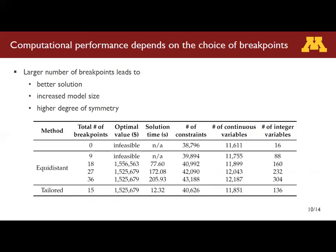The computational performance strongly depends on the choice of breakpoints. A larger number of breakpoints generally leads to a better solution at the cost of increased model size and higher computational difficulty. The solution improves with more breakpoints, but computation time also increases. What we can do is be smarter about how to place the breakpoints by leveraging problem-specific features. In this case, the proposed decisions may change once the demand reaches the lower or upper bound of the production range for each unit. So we use these values as breakpoints, and this instance uses fewer breakpoints but obtains the same optimal solution in much less computation time.